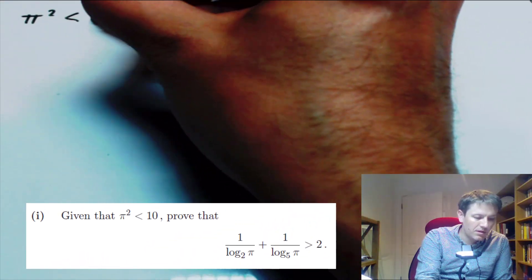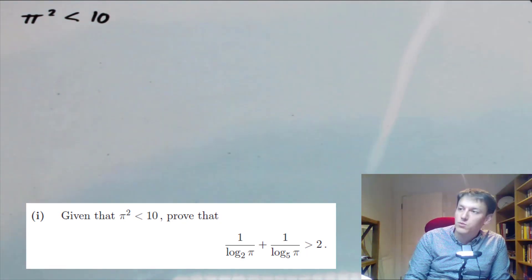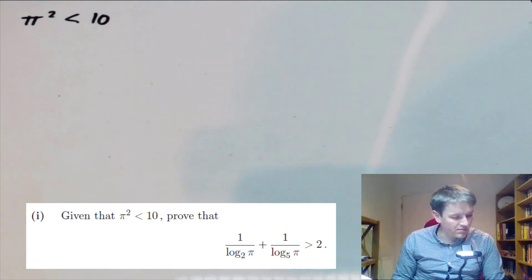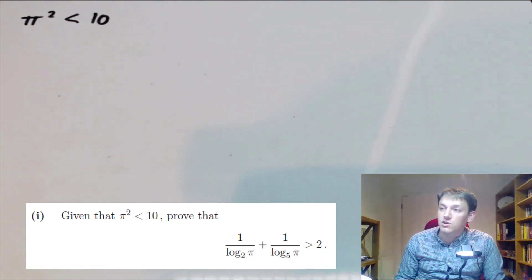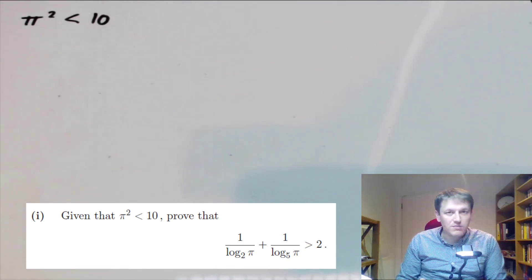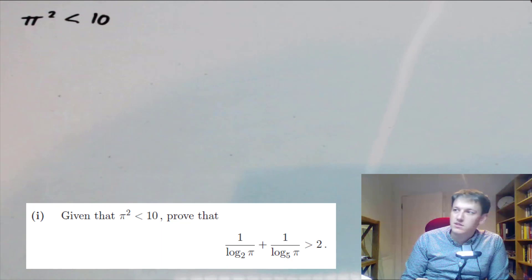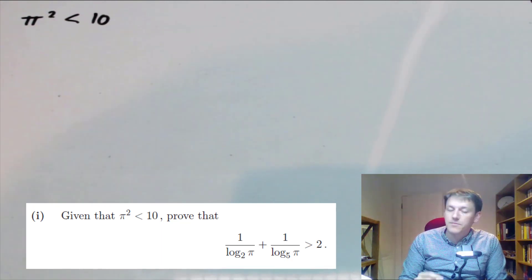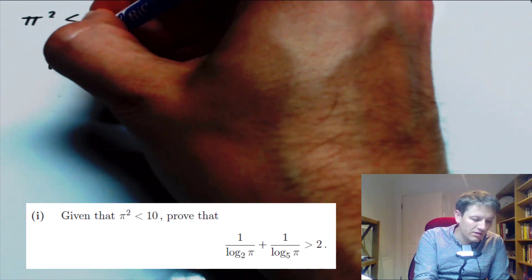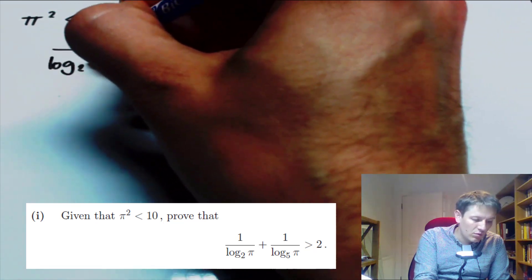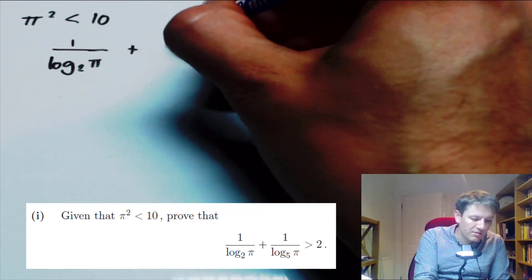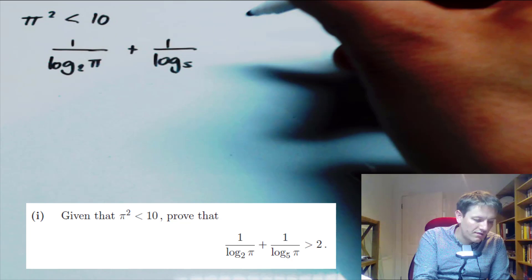We're told that π² is less than 10, and we want to prove that 1 over log₂(π) plus 1 over log₅(π) is greater than 2. The fact that we've been given the change of base formula means we must be able to use that. A common mistake here is that we can't start with the full result — we have to start with one part of it, because the structure of the proof in mathematical language is very important.